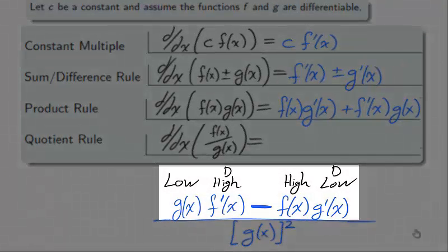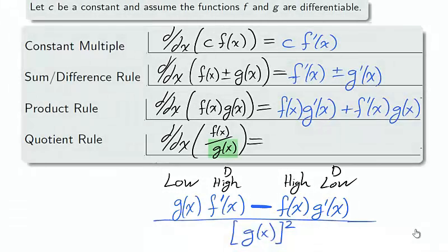It is read low d high minus high d low, and what is meant by low is the denominator g, and high is the numerator f. When we say d, we mean to take the derivative. So low d high means g times f prime minus high d low means f times g prime.